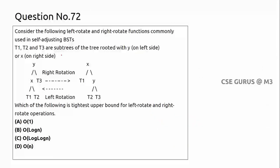Moving on to question number 72. The following left-rotate and right-rotate functions are commonly used in self-balancing binary search trees. We have rotations: left-left, left-right, right-left, and right-right. Here T1, T2, T3 are subtrees. The tree is rooted with Y on the left side and Y and X on the right side.